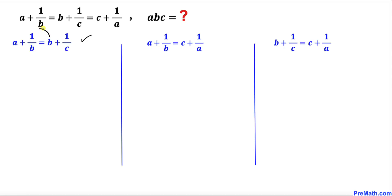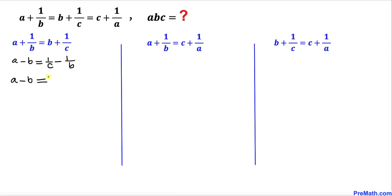Now let's focus on this first equation. We are going to move b to the left hand side, and at the same time move 1 over b to the right hand side. That gives us a minus b equal to 1 over c minus 1 over b. Now let's deal with these fractions by subtracting them.